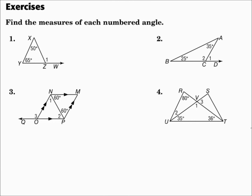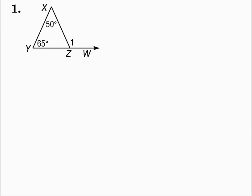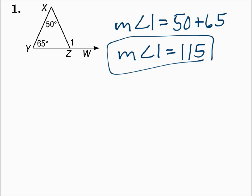Find the measures of each numbered angle. Number one: angle one is an exterior angle. The 50-degree and 65-degree angles are the remote interior angles. The exterior angle is the sum of the remote interior angles, so the measure of angle one = 50 + 65 = 115.